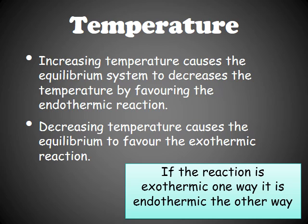Another thing you can change is the temperature. If you increase the temperature, this causes the equilibrium to decrease the temperature and favor the endothermic direction. Decreasing the temperature causes the equilibrium to favor the exothermic reaction. For example, if you want to increase combustion — which is the exothermic process — you should decrease the temperature, because this allows the equilibrium to favor the exothermic direction and combustion.